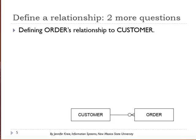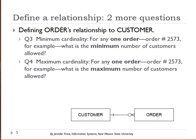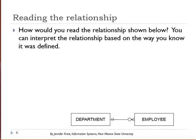Now you have to ask the same two questions from the other end — from order to customer. For any one order, say order number 2573 placed this morning at 8 a.m., what is the minimum number of customers allowed? The minimum is one — you can't have an order without a customer. And what is the maximum number of customers for that order? That would also be one. So you can interpret the relationship based on how it is defined.